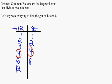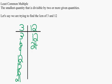Least Common Multiple is the smallest quantity that is divisible by two or more given quantities. Least common multiples can be used to help us find equivalent fractions. These are some examples of LCM.